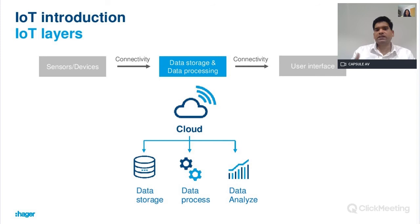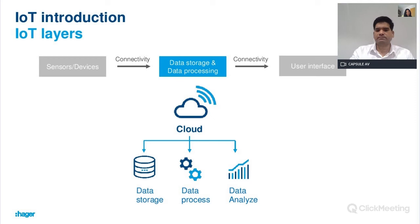The next layer is data storage and processing. Once the data is pushed to this layer, it is stored, processed and analyzed to extract insights and take decisions. This happens on the cloud — which is nothing but a huge interconnected set of powerful servers to perform these services.